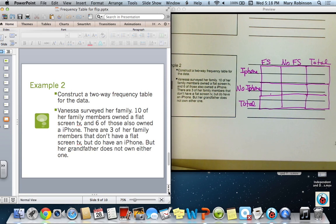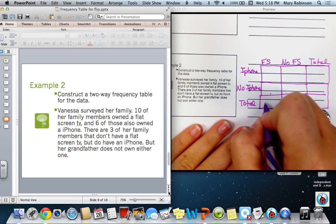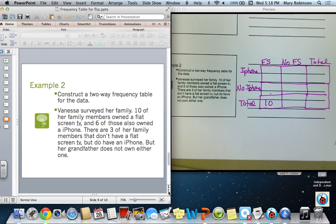So, it tells us that ten of her family members owned a flat-screen TV. So, ten owned a flat-screen. That means ten total. So, we know we want to add it down here. We don't know whether those ten have a phone or iPhone from that statement. Next, it says six of those also owned an iPhone. So, of these ten that had a flat-screen, six had an iPhone.